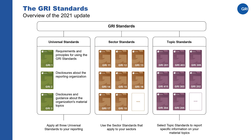The new sector standards have a brown cover with a two-digit number, starting from 11 for the oil and gas sector standard. The adapted topic standards have a purple cover, but their numbers remain unchanged for now, reflecting the fact that there have been no changes to the disclosures in the topic standards, so the reporting requirements remain the same as before.